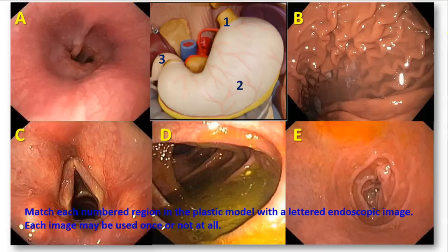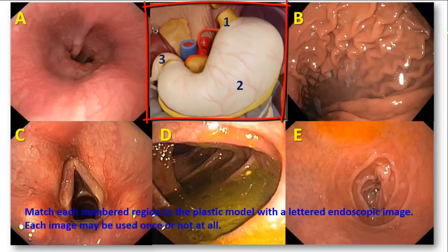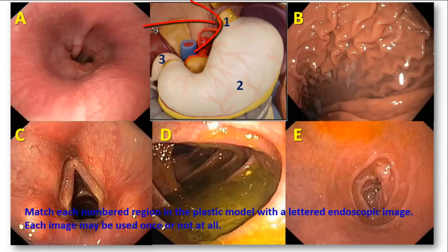In this question, you are required to match each numbered region in the plastic model with a lettered endoscopic image. In the plastic model, the first site is located at the gastroesophageal junction, the cardiac orifice of the stomach. If we study the endoscopic views,